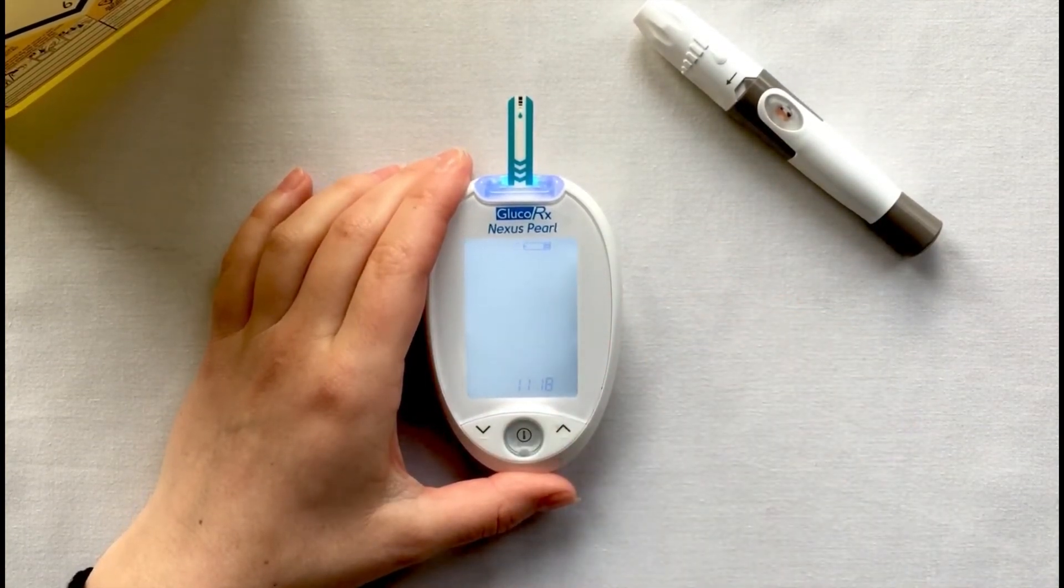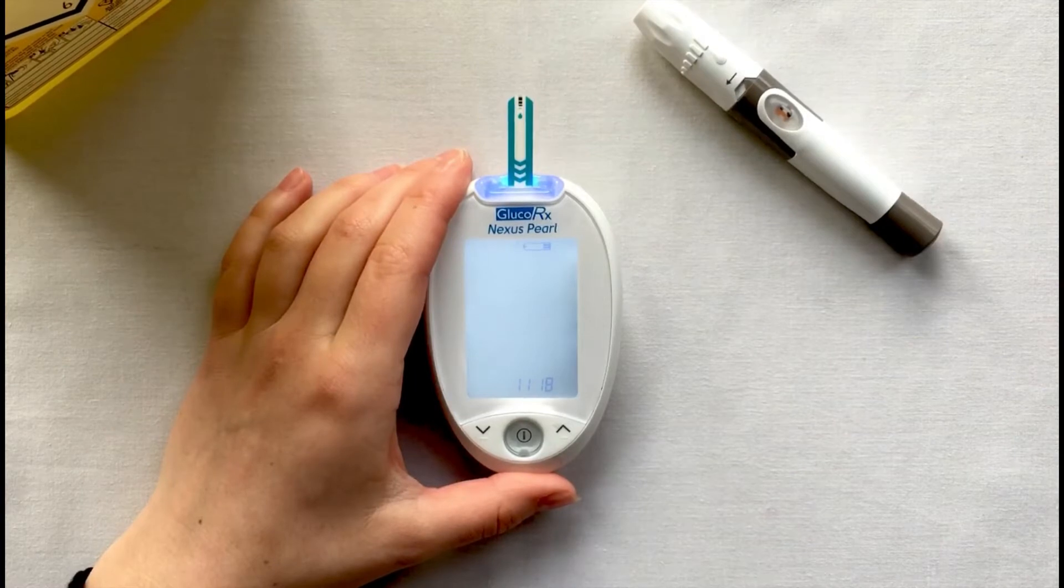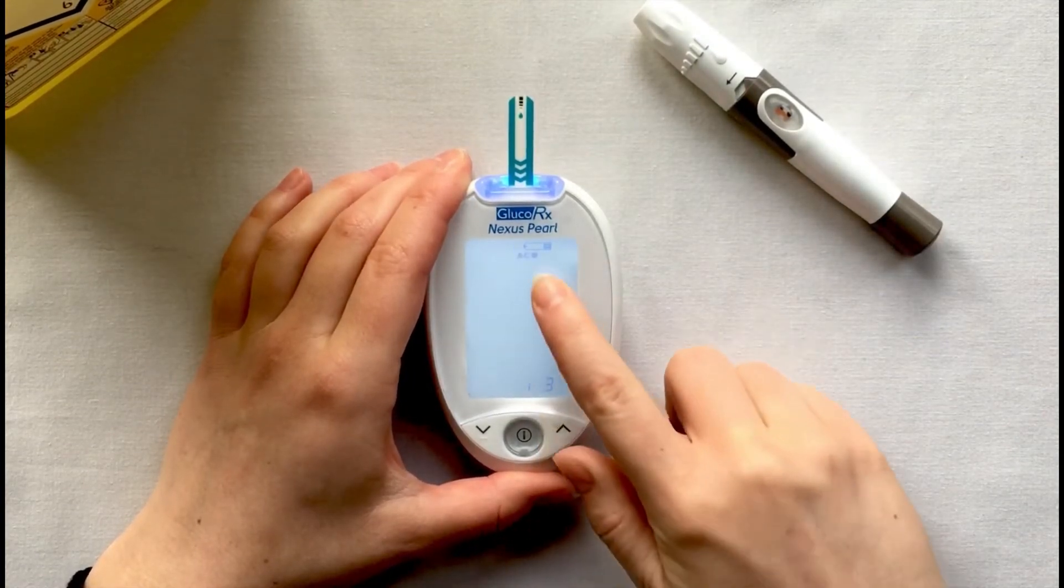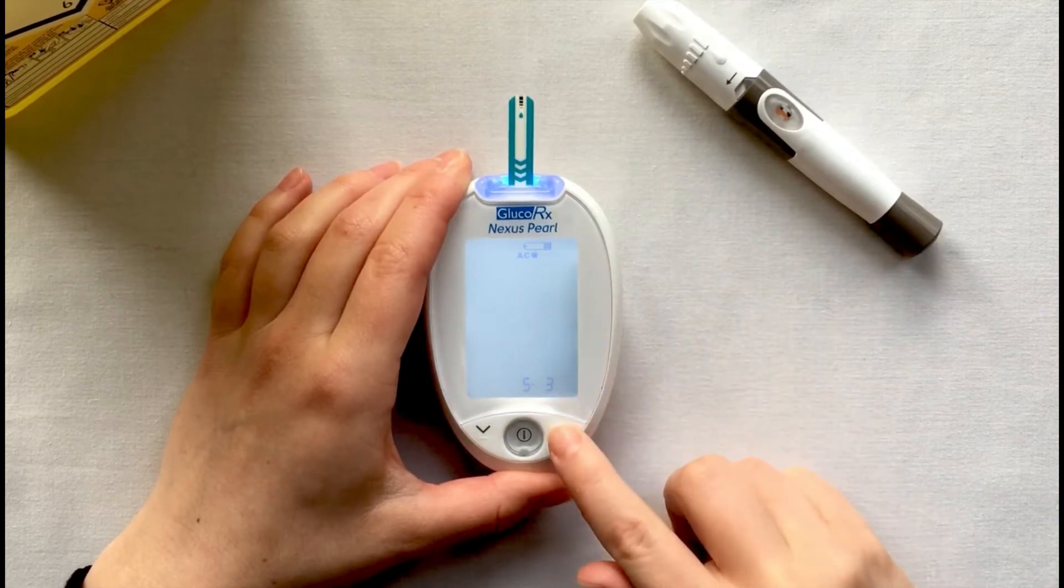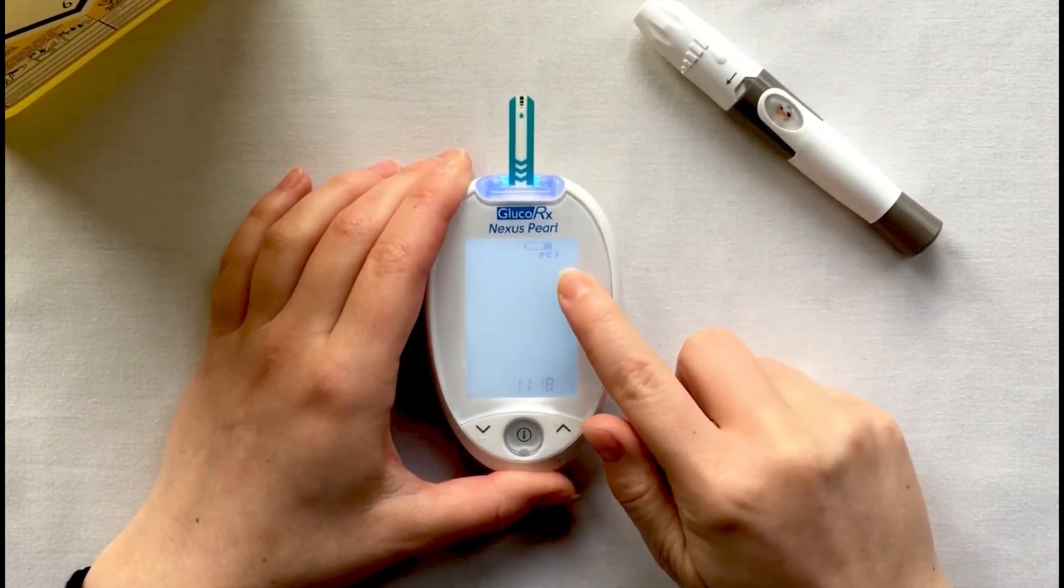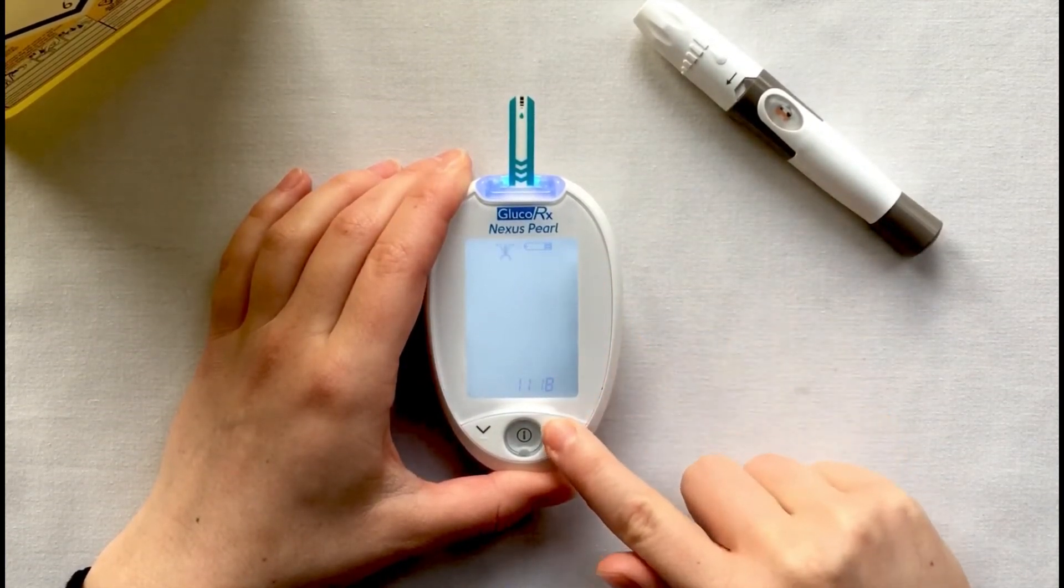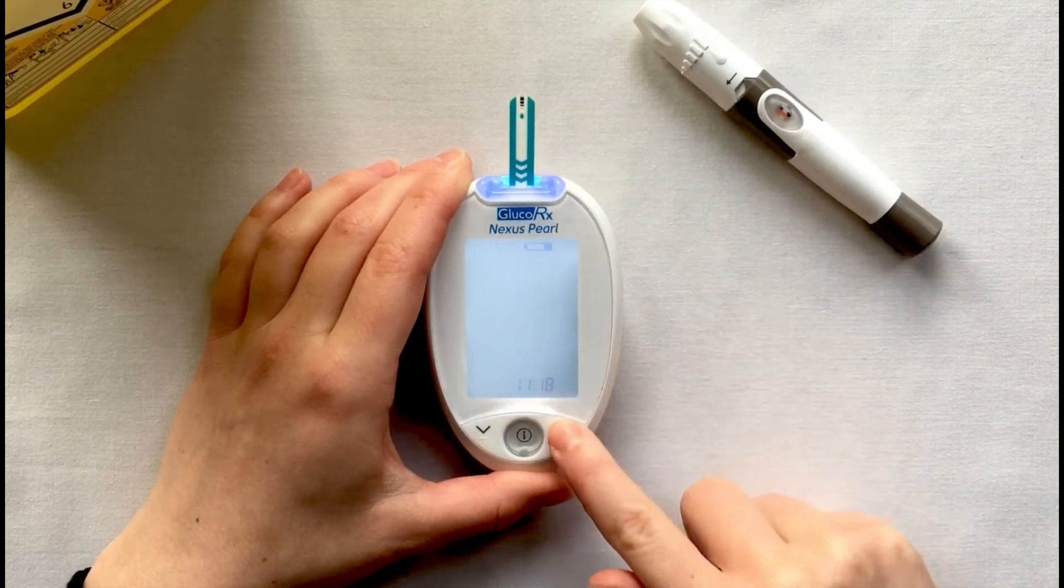Select your measuring mode by pressing the up arrow: general, before meal AC full apple, after meal PC half eaten apple, exercise mode, or QC for quality control test.